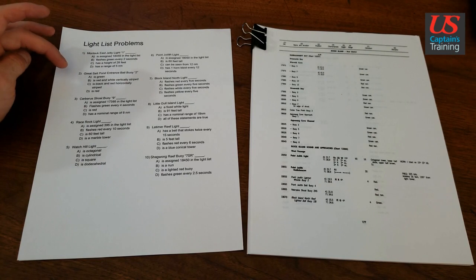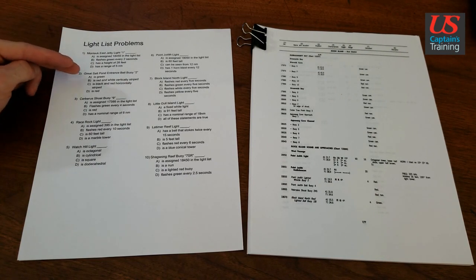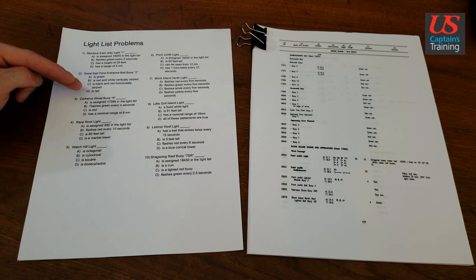Light List Problem 2, Great Salt Pond Entrance Bowie 2. And your choices are A is green, B is red and white vertically striped, C is black and red horizontally striped, or D is red.